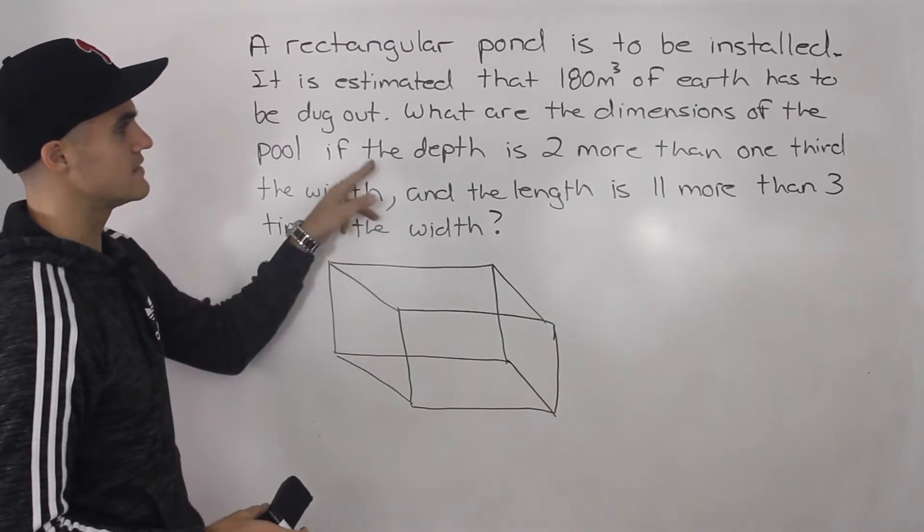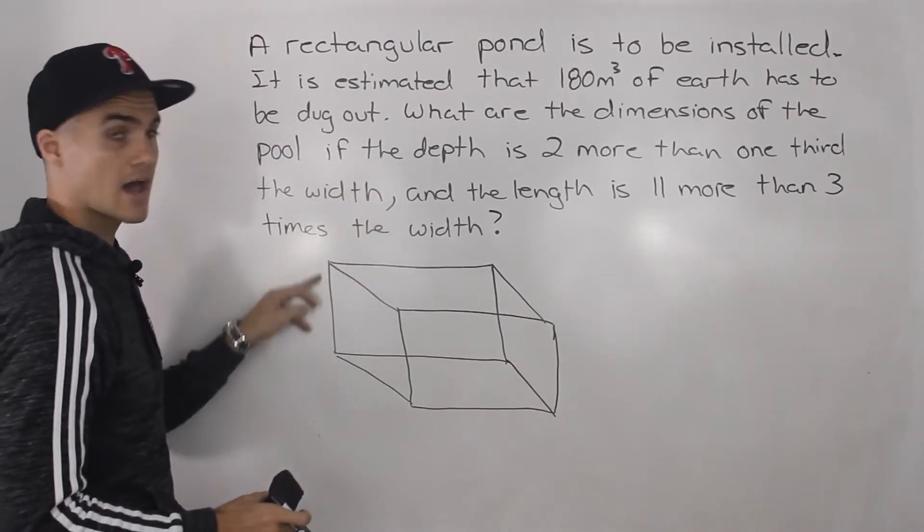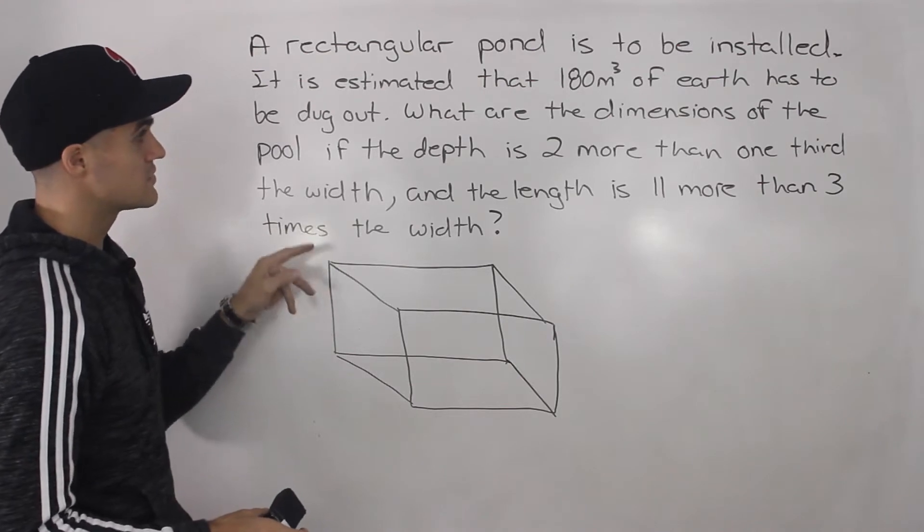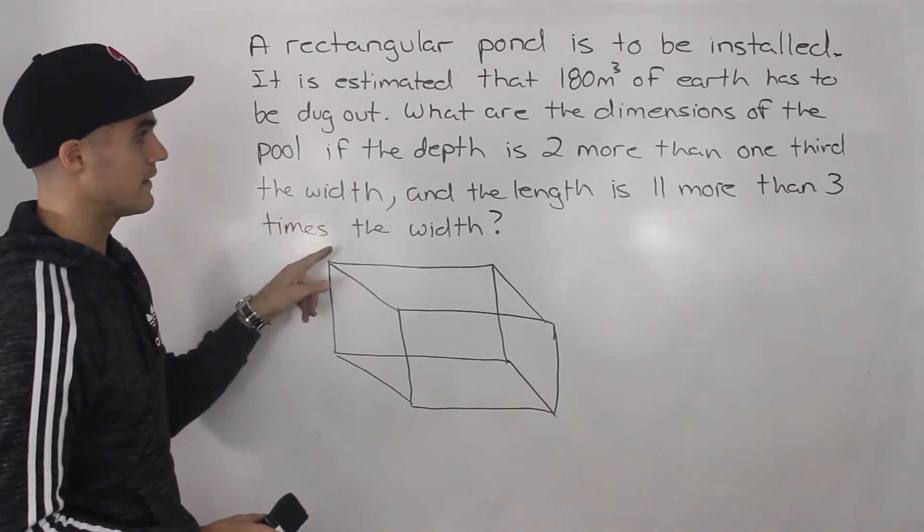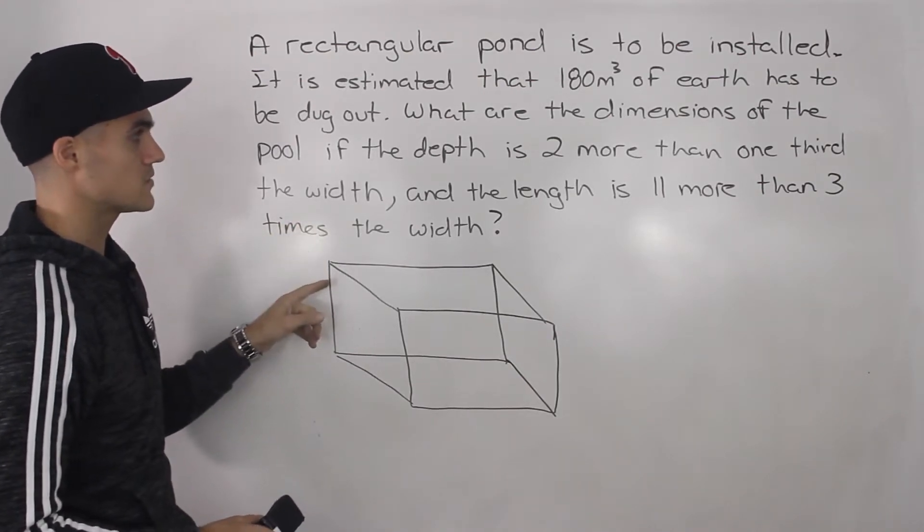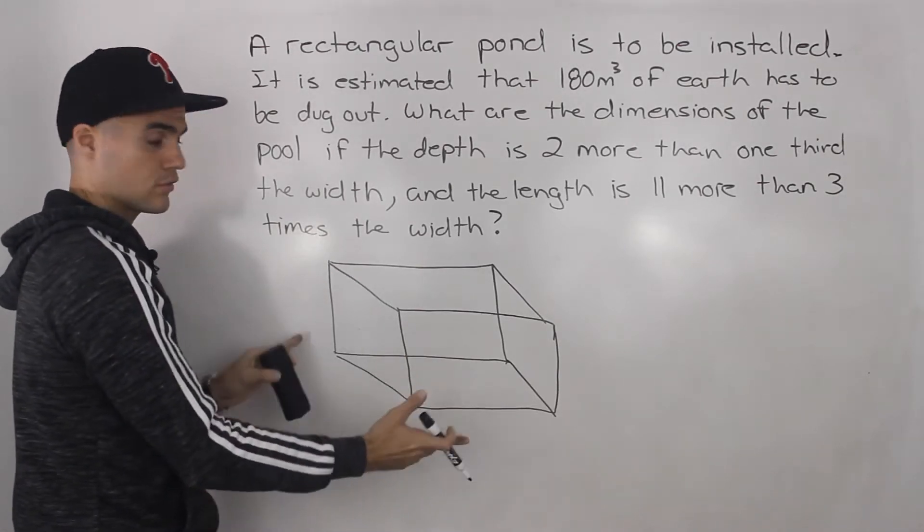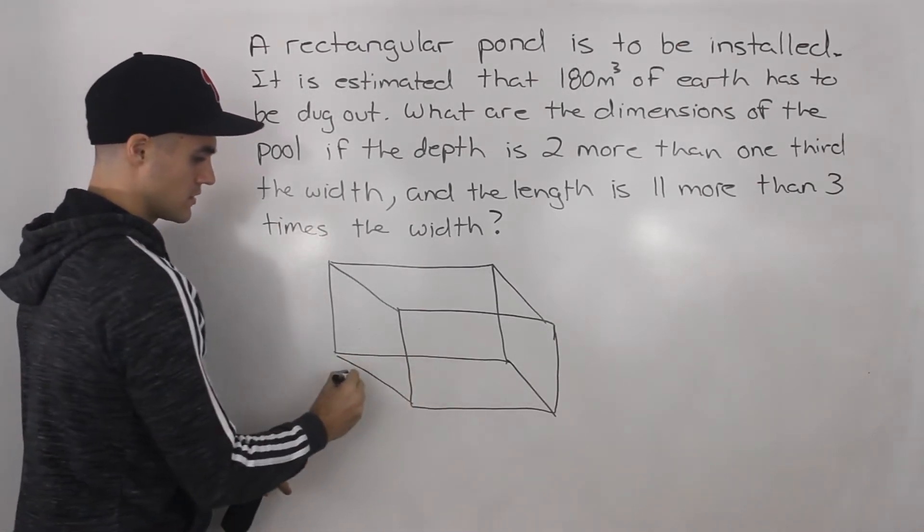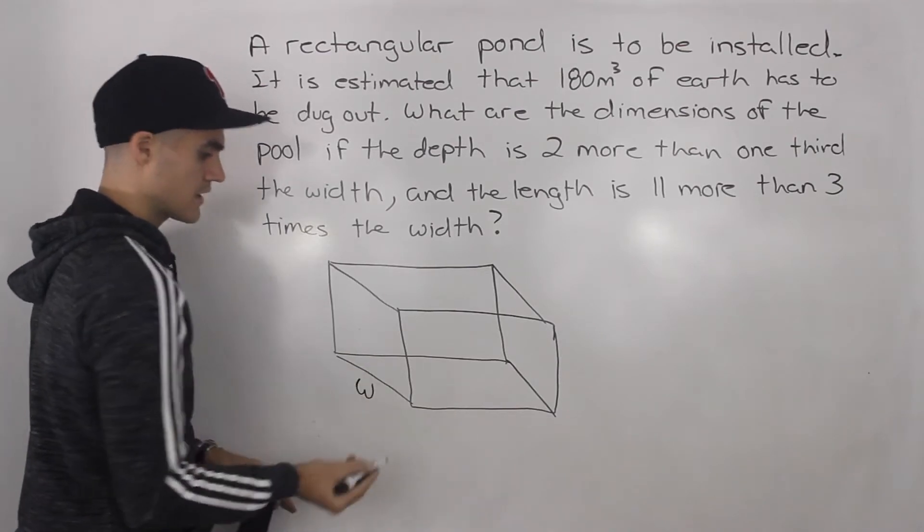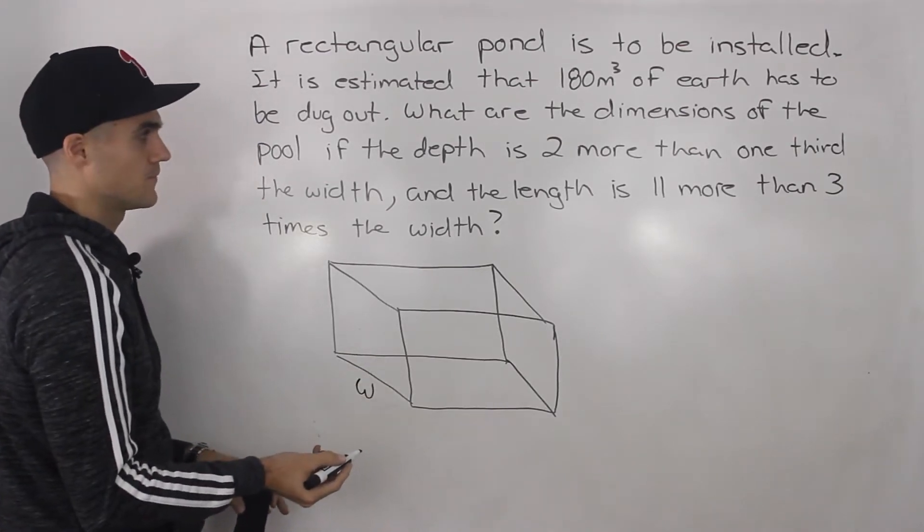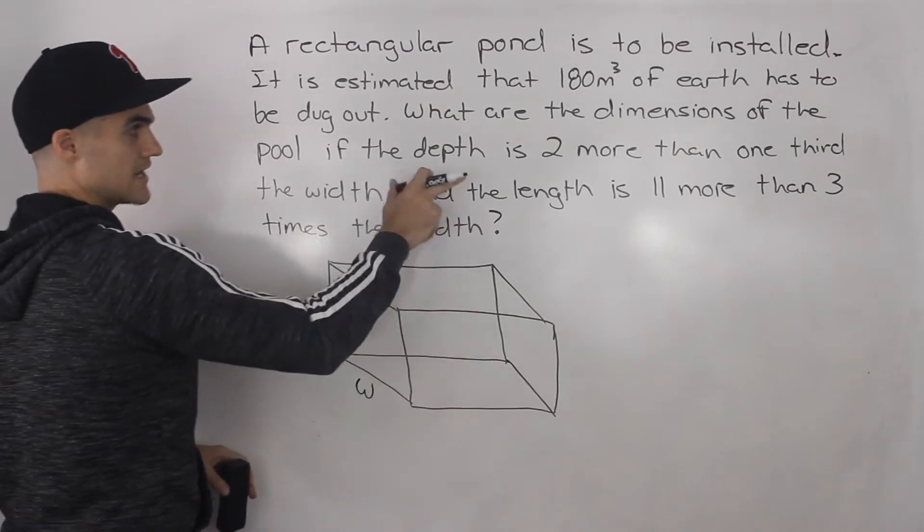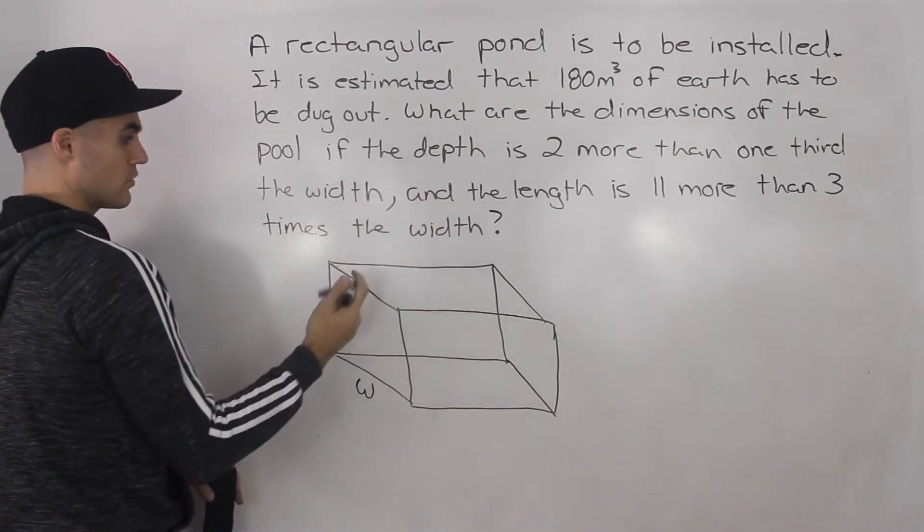Well notice that they say the depth, which is the same thing as the height, is two more than one third the width and the length is 11 more than three times the width. So they're expressing the height and the length, both of them in terms of width. So it's probably a good idea to just label the width as w.